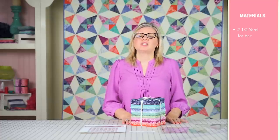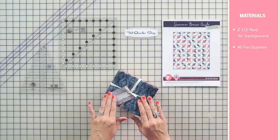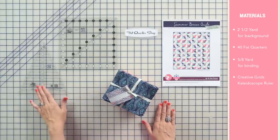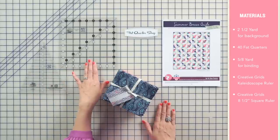What you need is 2 1⁄2 yards background, 40 fat quarters, and 5 1⁄8 yard binding. You also need a kaleidoscope ruler by Creative Grids and an 8 1⁄2 inch square ruler. So let's get started.